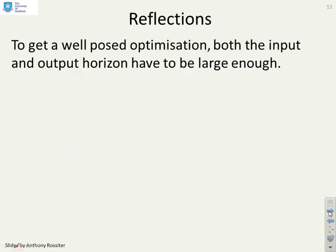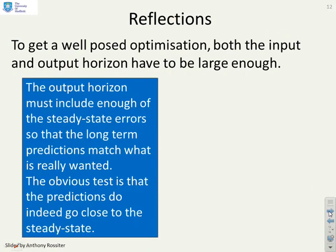So some reflections: to get a well-posed optimization both the input and the output horizon have to be large enough. Now the output horizon must include enough of the steady state errors so that the long-term predictions match what is really wanted. And the obvious test for this is when you do an optimized prediction do the predictions actually go to the steady state within the horizon and stay at the steady state beyond?